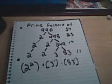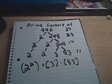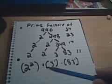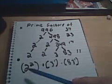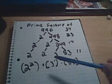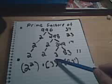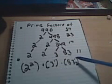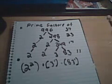Now you can rewrite this in shorthand like so. You will notice that I have written this quantity 2 squared multiplied by 3 to the first multiplied by 83 to the first. This square right here indicates that there are two 2s in our factor tree. 3 to the first indicates one 3, and 83 to the first indicates one 83.